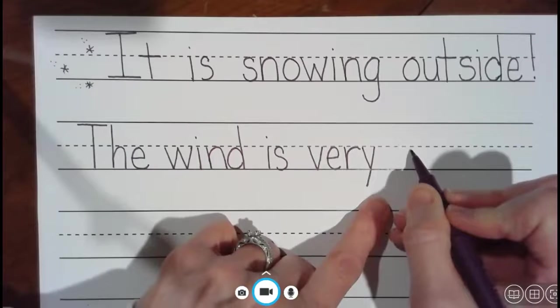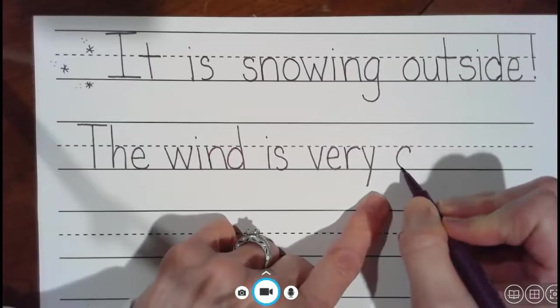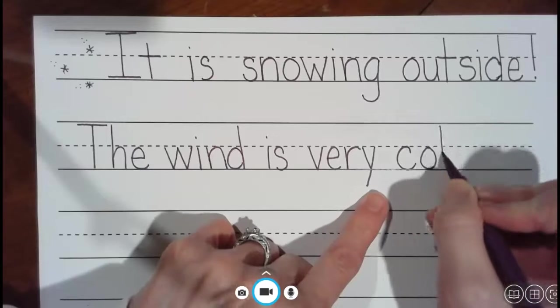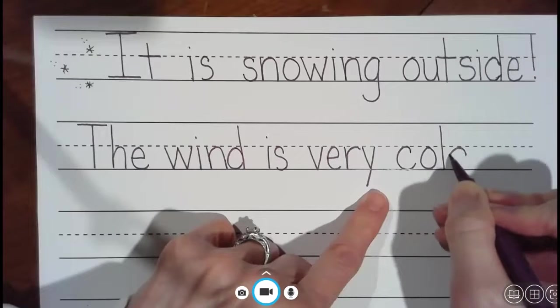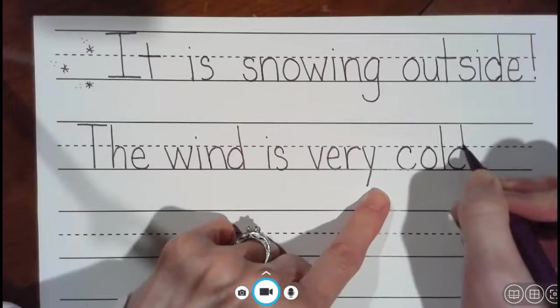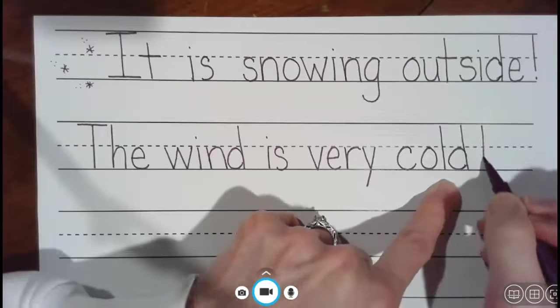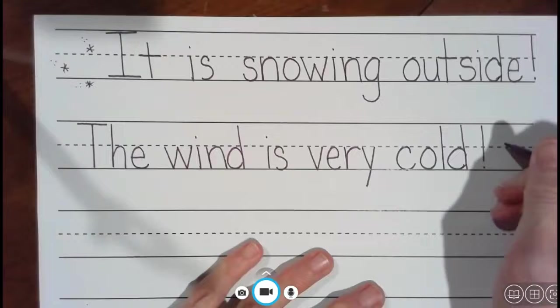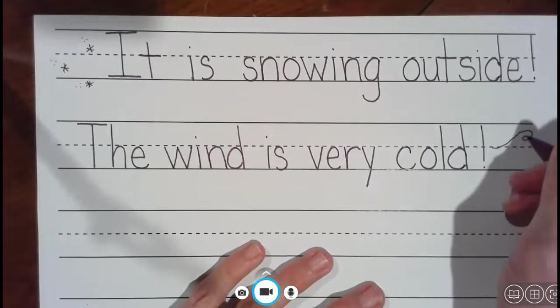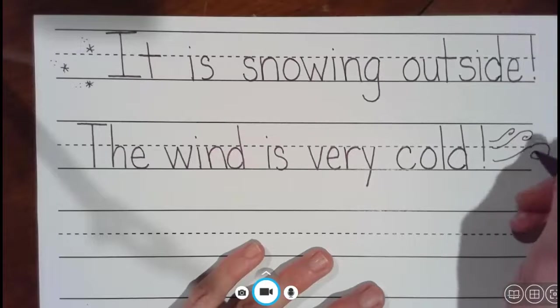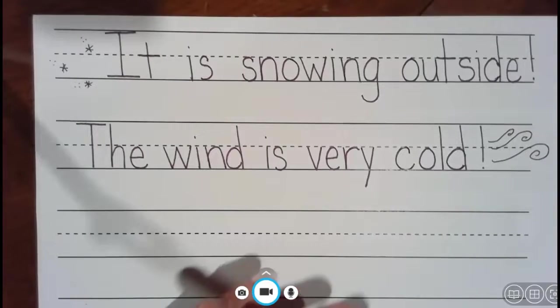The wind is very cold. Oh, cold, that's a sight word for some of you, isn't it? Cold. The wind is very cold. This also is an exclamation point. The wind is very cold. I'm gonna draw some wind blowing lines to show that the wind is blowing. I like to do that. That looks like it's windy, doesn't it?